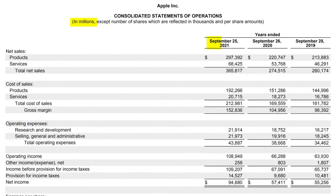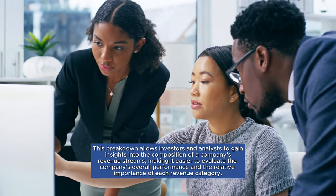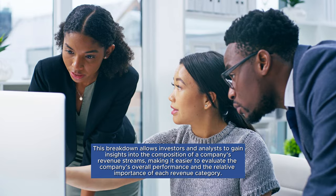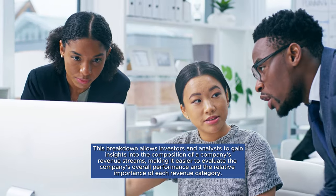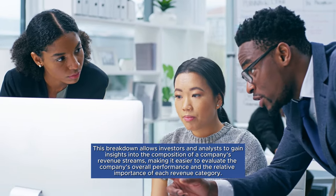Apple, on the other hand, divides its revenue into two primary categories. Products: this includes sales of physical products like iPhones, iPads, AirPods, Apple Watches, and Macs. Services: revenue generated from software and subscription services, which might include App Store revenue, Apple Music, cloud storage fees, and any other income not related to physical products. This breakdown allows investors and analysts to gain insights into the composition of a company's revenue streams, making it easier to evaluate overall performance and the relative importance of each revenue category.